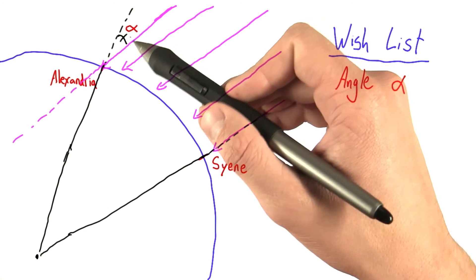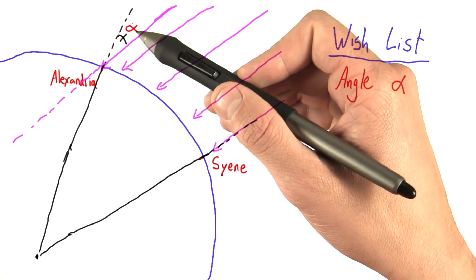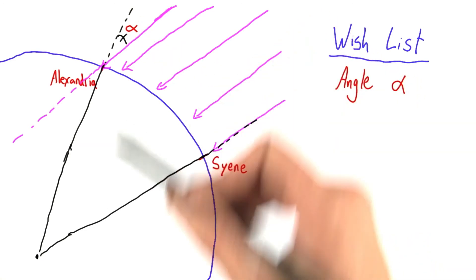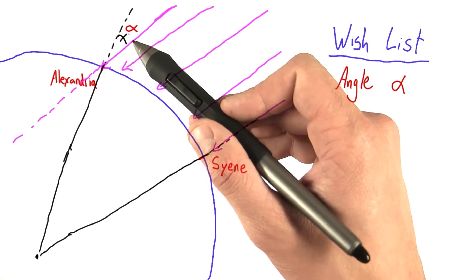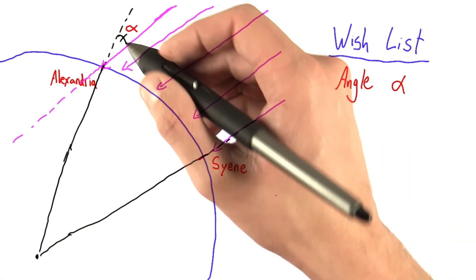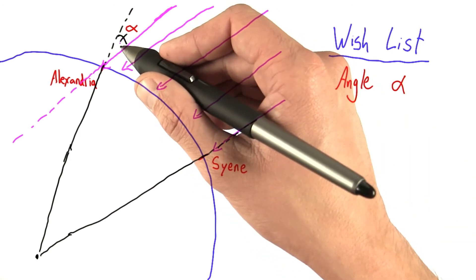This angle alpha shows up in more than one place. I'll tell you there are other angles on this drawing that are equal to alpha. Maybe one, maybe more. I'm going to mark some contenders, and why don't you tell me which ones are correct.